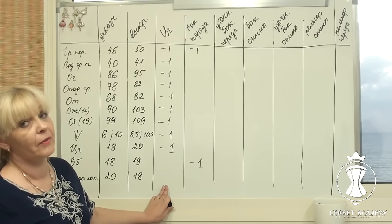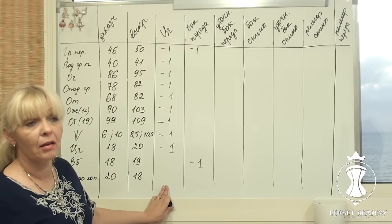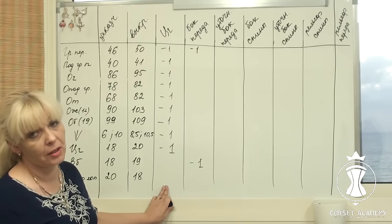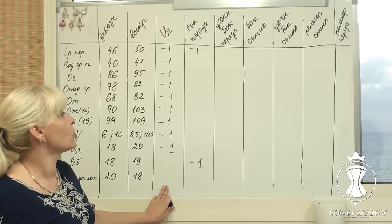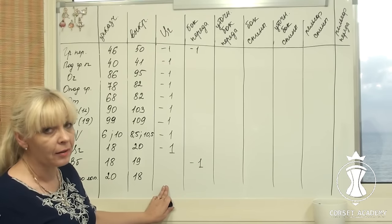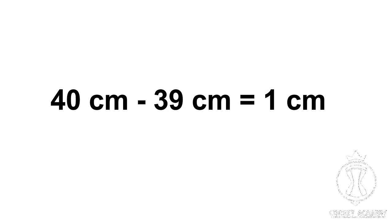Underbust front measurement. It is 40 cm on the client and 41 cm on the pattern. But I have narrowed the central front piece by 1 cm from each side at the underbust level. 41 cm minus 2 cm equals 39 cm. Therefore, 40 cm minus 39 cm equals 1 cm.